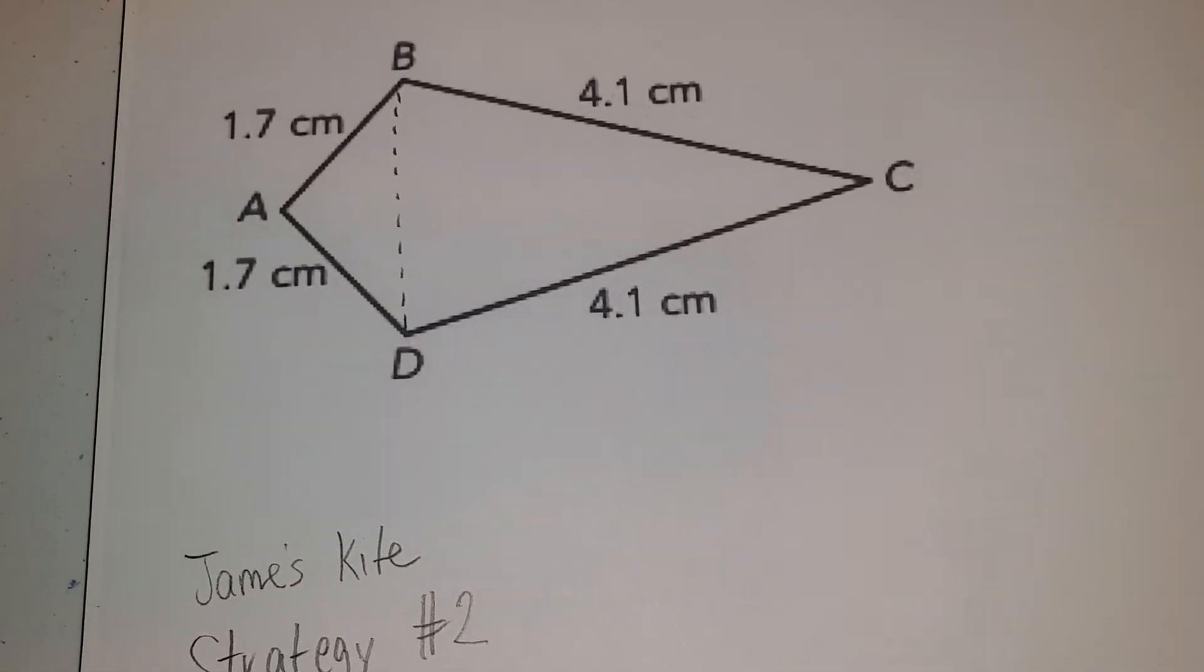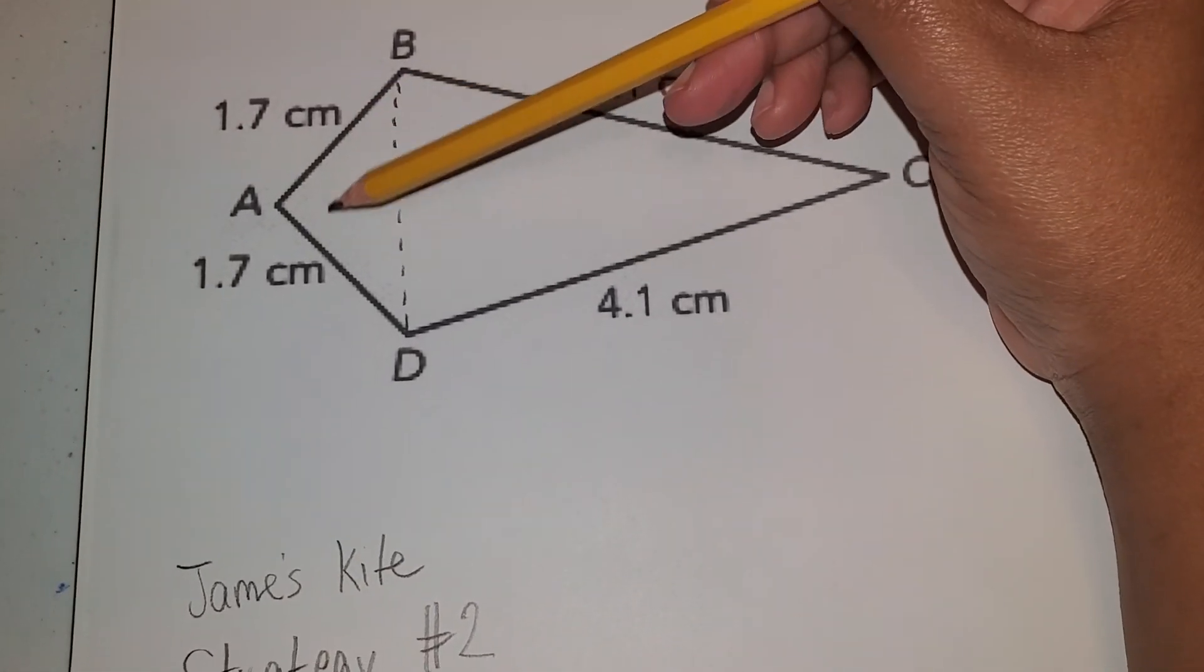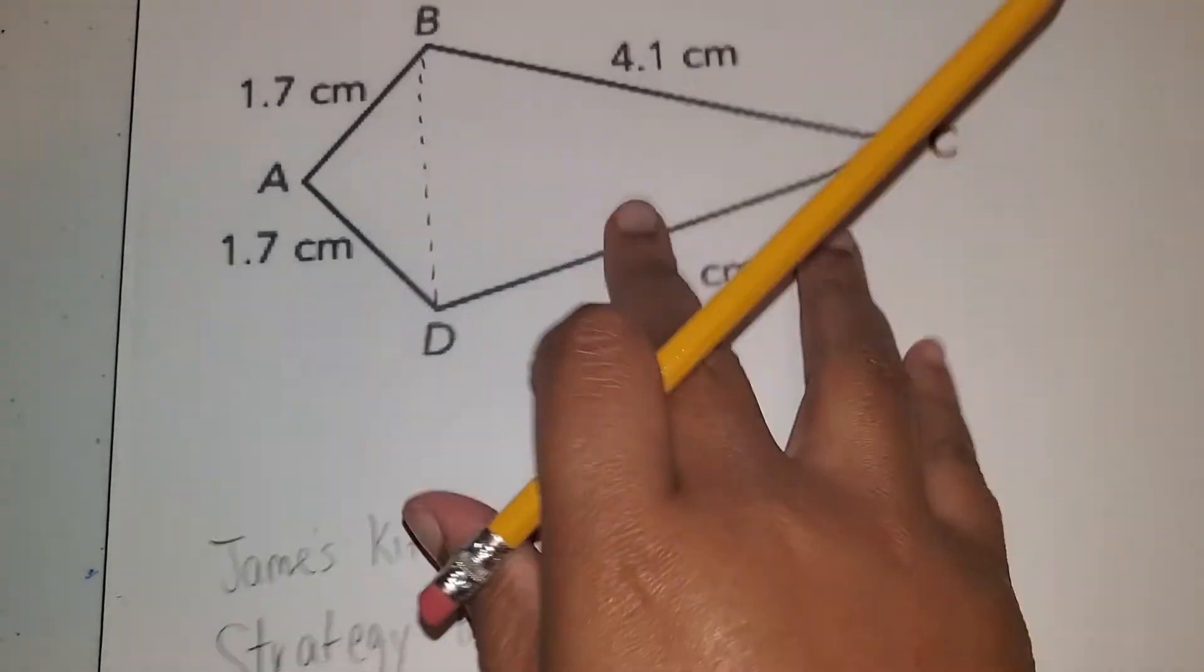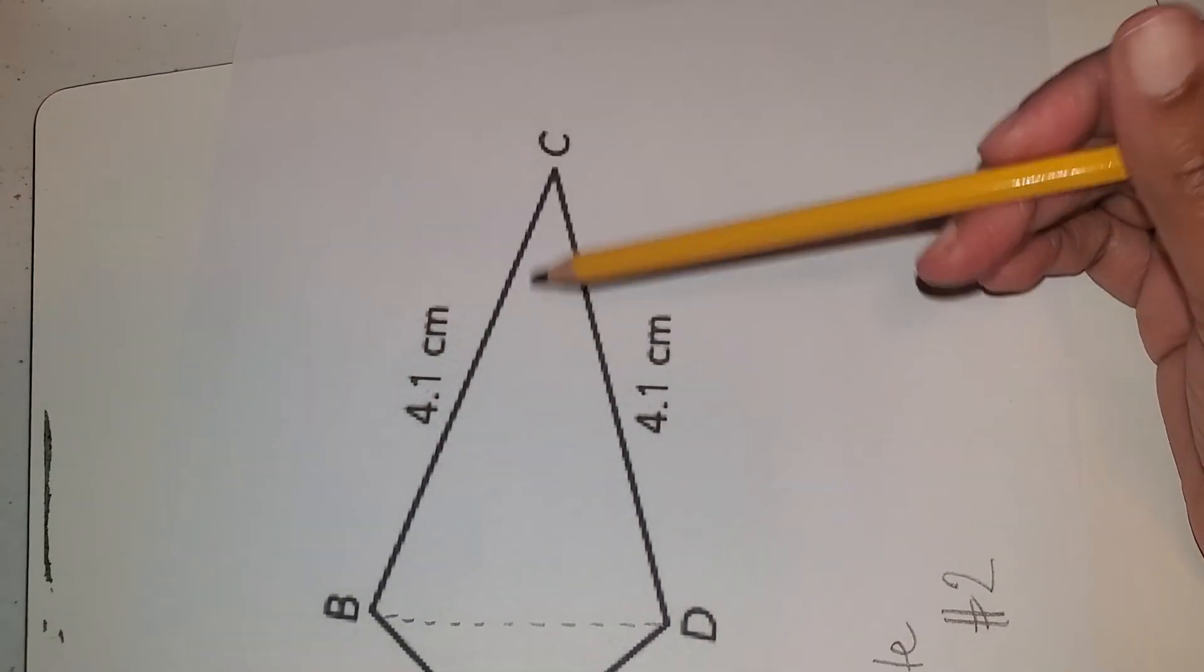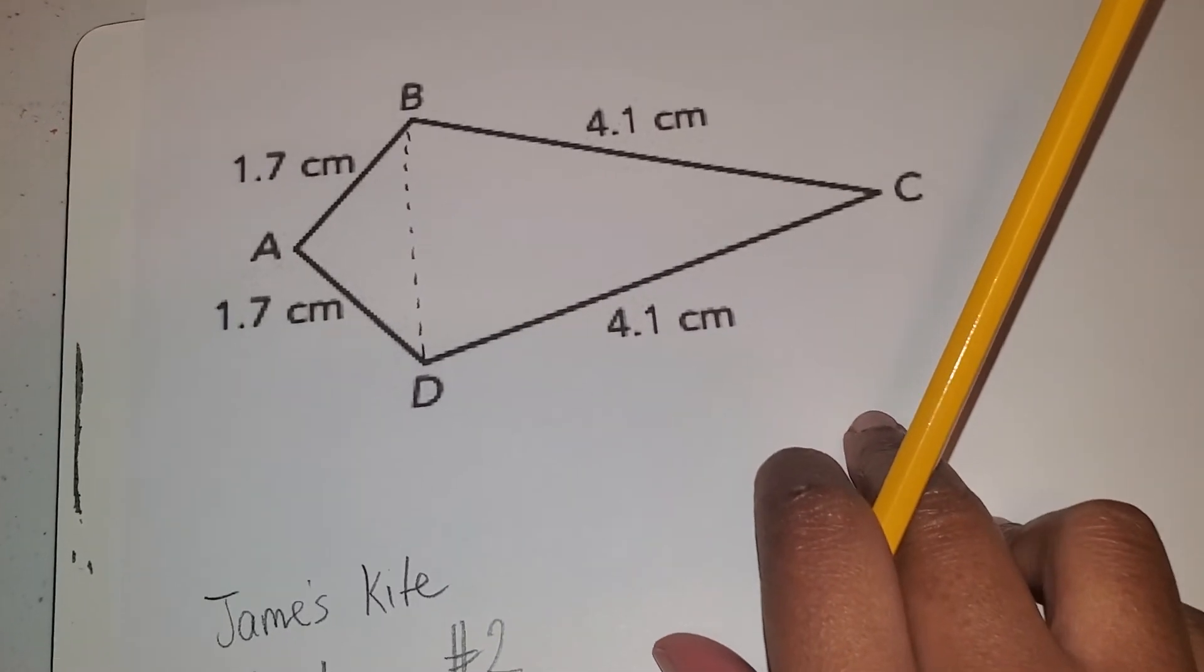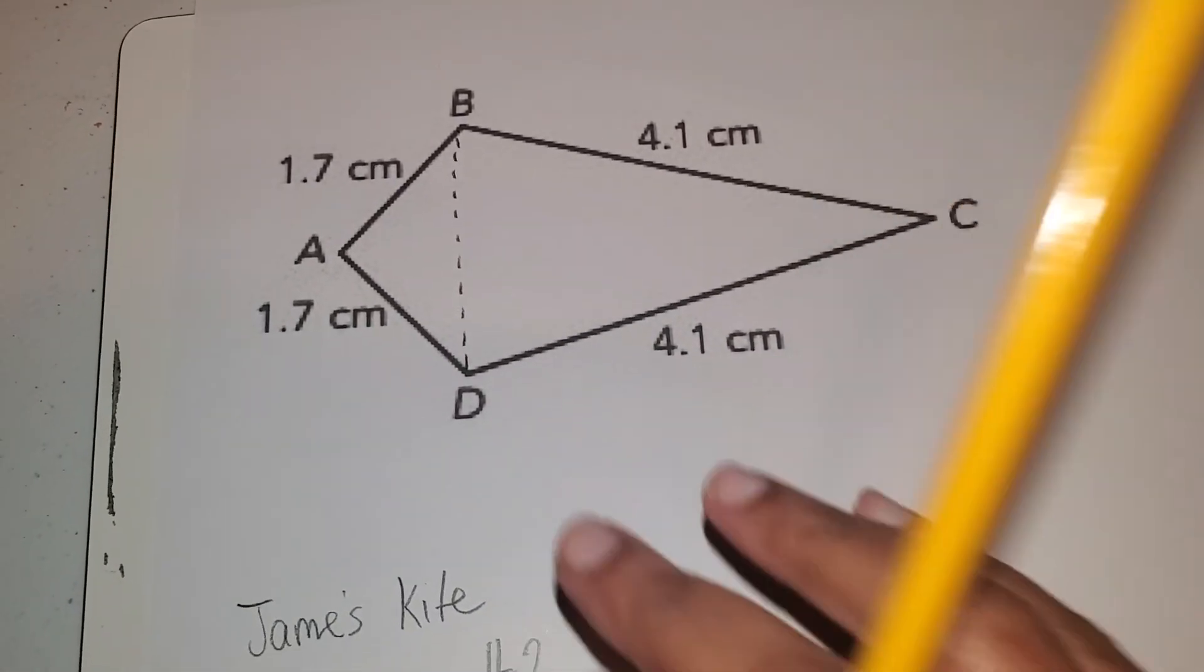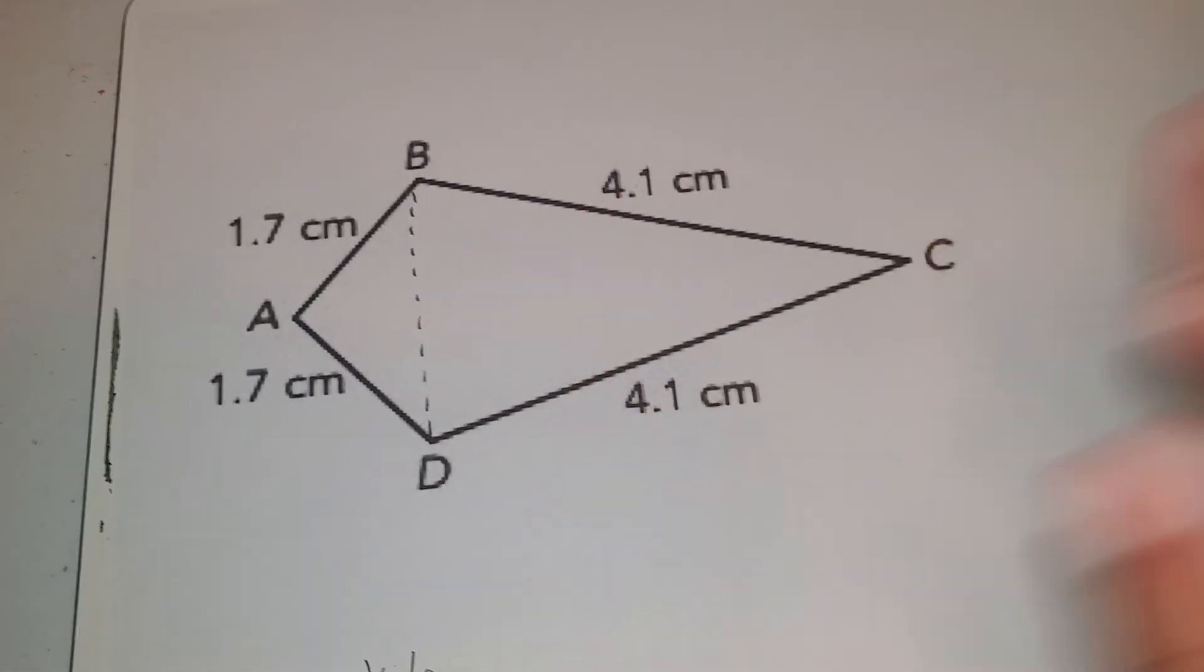James cut his so that he has one small triangle up here and another big triangle down here. So he still has two triangles. That's what James did.